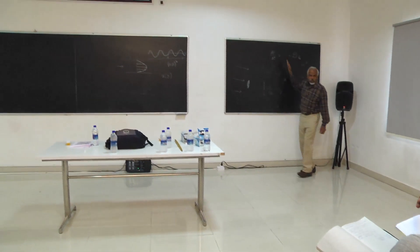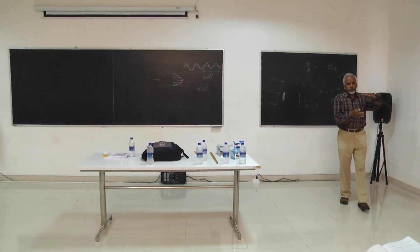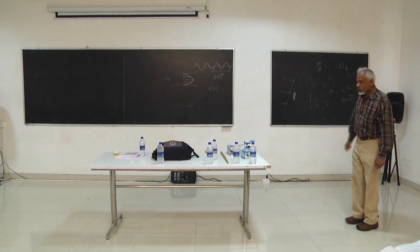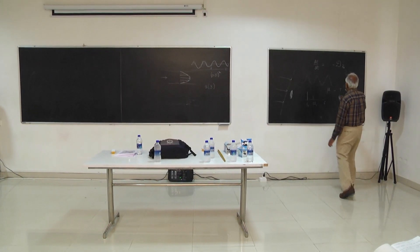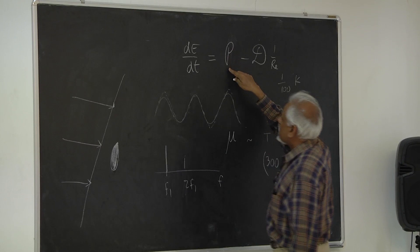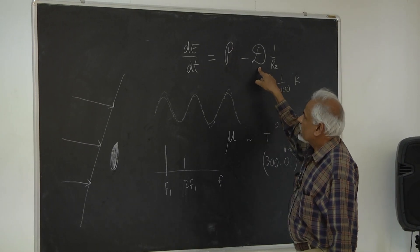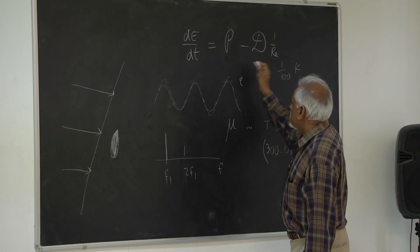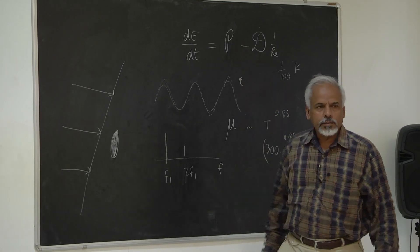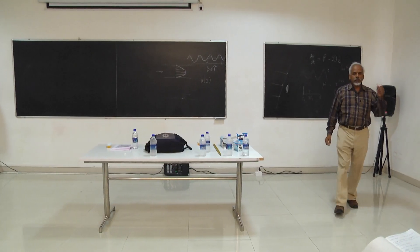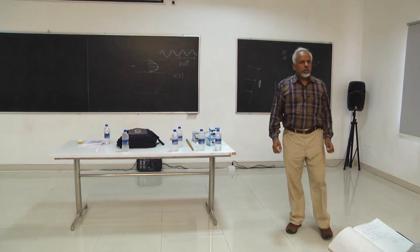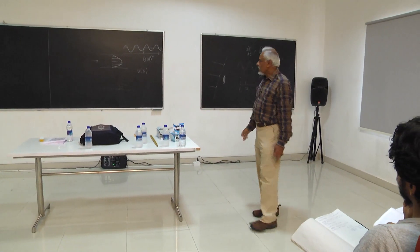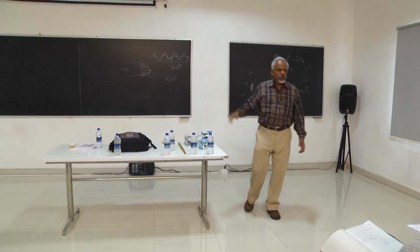If P is zero — which is the case when there is no basic flow — then the perturbation can only decay. There may be enough production to balance dissipation and a little more, and then it will grow like e to the power (P minus D) divided by some factor. Initially P may be larger but after some time it gets smaller, so it could initially grow and then decay.